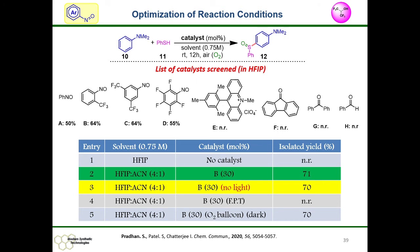Having established our hypothesis, we started optimization of the reaction condition. We took N,N-dimethylaniline and thiophenol as standard substrates and varied various catalysts in HFIP. We found that bis(trifluoromethyl)nitrosobenzene was the best catalyst for this transformation. HFIP and acetonitrile in a 4:1 mixture gave the best result of 71% yield, that is entry 2. Several control experiments were carried out: in the absence of catalyst, in the absence of oxygen, and in the absence of HFIP, very little or no product was obtained.